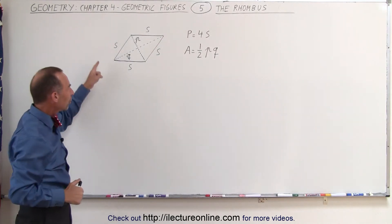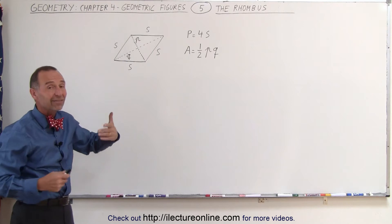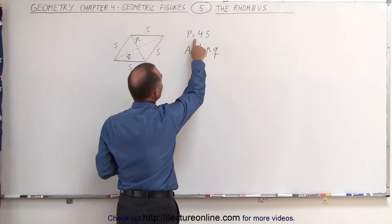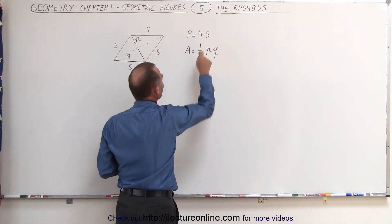We then realize that the perimeter of a rhombus will simply be the same as the perimeter of a square, since all sides are the same, it is equal to four times the length of a side.